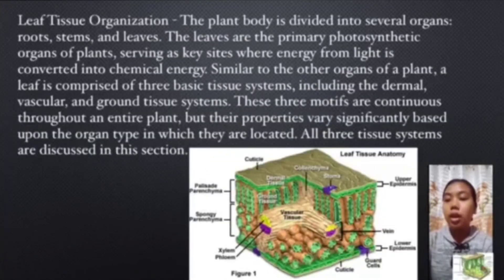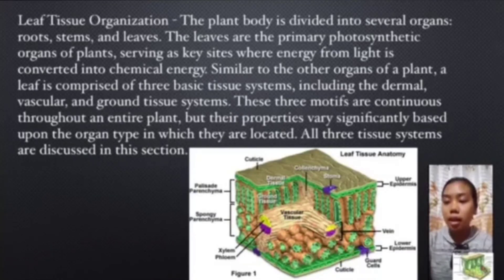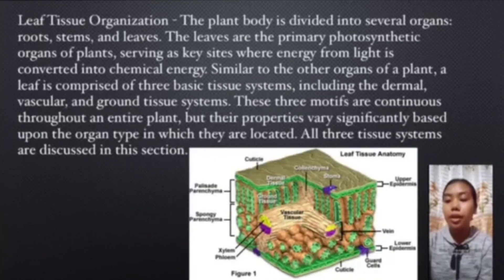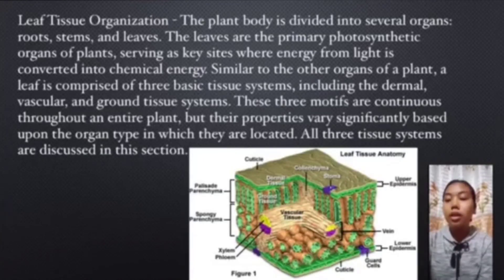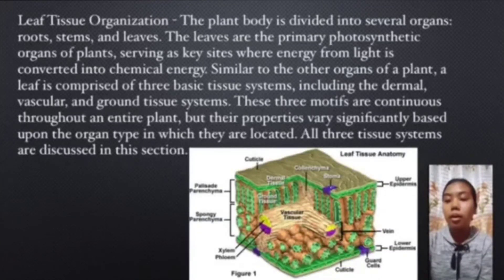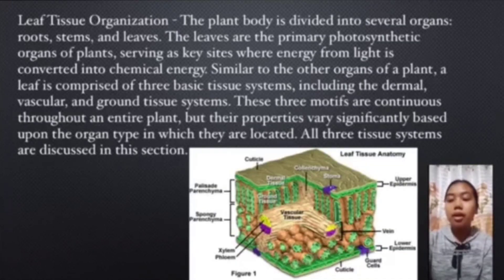Leaf tissue organization. The plant body is divided into several organs: roots, stems, and leaves. The leaves are the primary photosynthetic organs of plants, serving as key sites where energy from light is converted into chemical energy. Similar to the other organs of a plant, a leaf is comprised of three basic tissue systems, including the dermal, vascular, and ground tissue systems. These three systems are continuous throughout an entire plant, but their properties vary significantly based upon the organ type in which they are located.